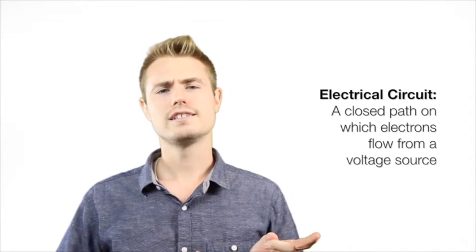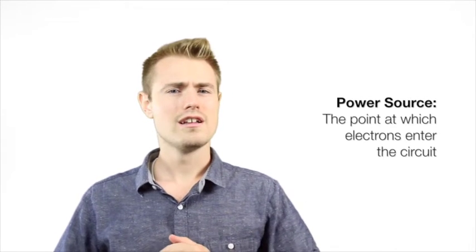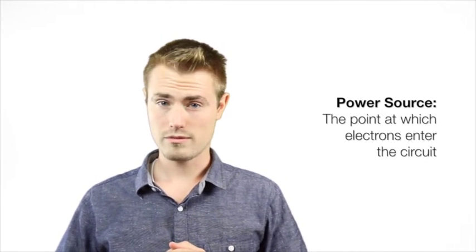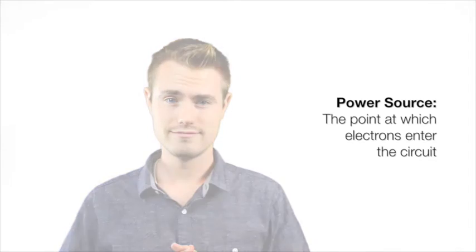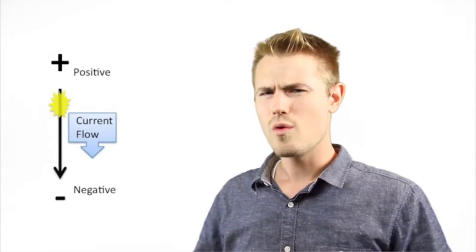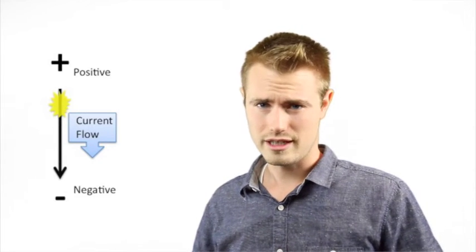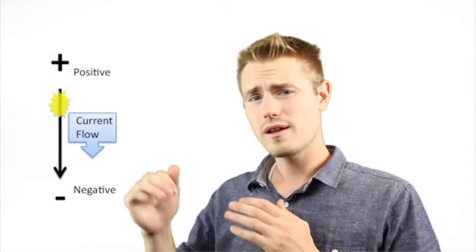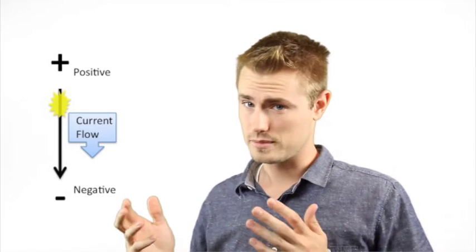The point at which the electrons enter the circuit is called the source of electrons, or power source. When we talk about the flow of electrons through a circuit, we often refer to it as the flow of current through a circuit. Current always flows from positive to negative in terms of direction.